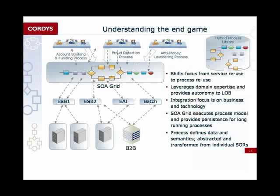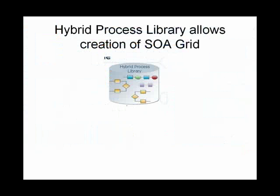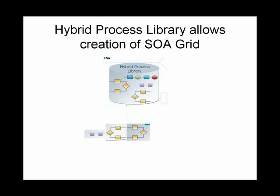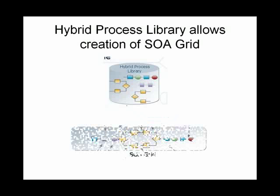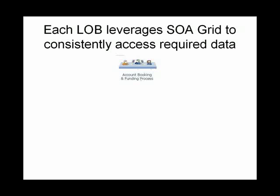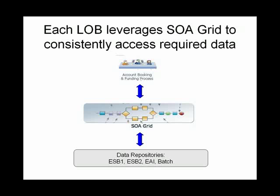This slide here has a very complex graphic, and as you can see the problem is we have difficulty trying to explain it because there's so much of it on the slide. What I did was use a process library that allows us to take each piece and build them in the order we want, ultimately ending up with this SOA grid. Each line of business is going to leverage that grid, which gives it consistent access to the required data. I took pieces of those graphics and built them so that they made sense, as opposed to overloading the audience with one huge graphic that's way too complex.